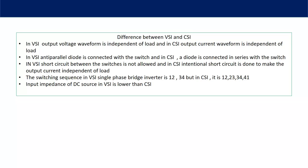The switching sequence in a voltage source inverter we have seen is one, two, three, four. Input impedance of the DC source in VSI is lower than CSI. Because in a current source inverter, we don't want to allow change in current, so the input impedance is increased by connecting inductance in series with the DC source. But in a voltage source inverter, we don't want to allow change in output voltage, so current should change. Because of that, input impedance of the source is made very low so that any change across the circuit can allow current to flow freely.